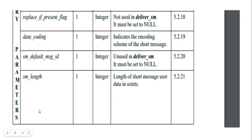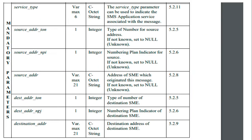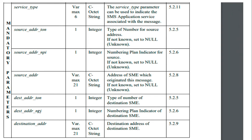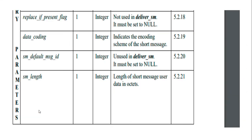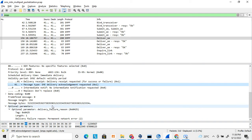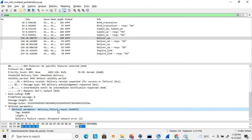So here are the mandatory parameters of deliver SM — I have described these in my earlier videos as well, and they are almost the same as submit SM. The most important optional parameter in deliver SM is the one that tells why the delivery failed if it is a delivery receipt. It shows you the failure reason. That is all about deliver SM.